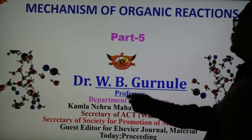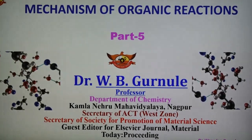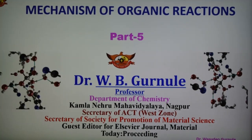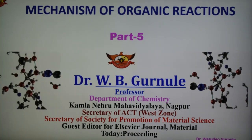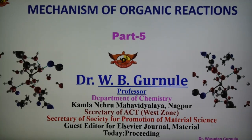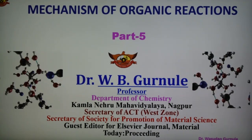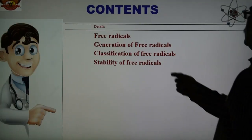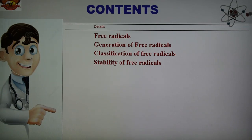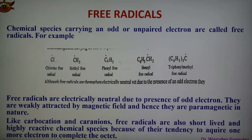The topic is the mechanism of organic reaction, and this is part number 5. In this part we are discussing the reaction intermediate, third number: Free Radicals. Topics covered here are: What is Free Radical? Generation or formation of Free Radicals, classification of Free Radicals, and stability of these Free Radicals.